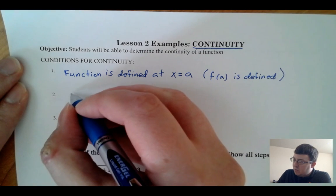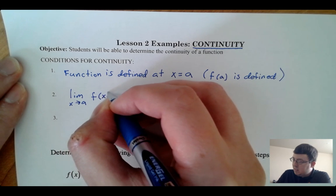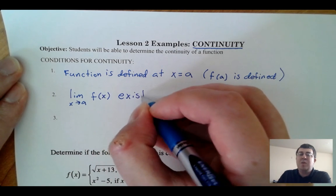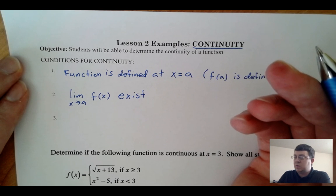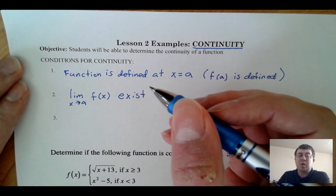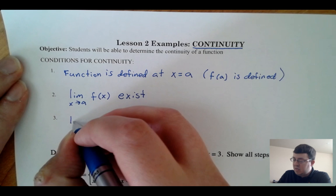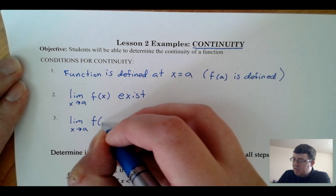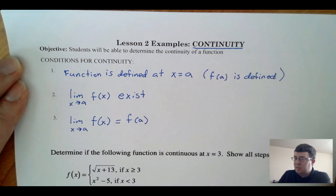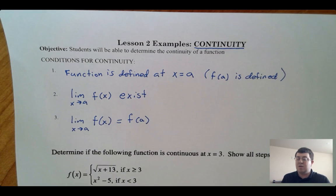Our second condition is that the limit as we approach this value of our function has to exist. That generally means we look at the right and left hand side limits and make sure they're the same thing. We'll often be dealing with piecewise functions when we do these problems. And lastly, if those two things are satisfied, the function is continuous if the limit as we approach a equals the function value at that point — approaching the same value from both sides with the function also defined there.